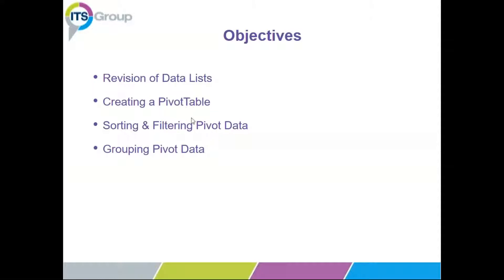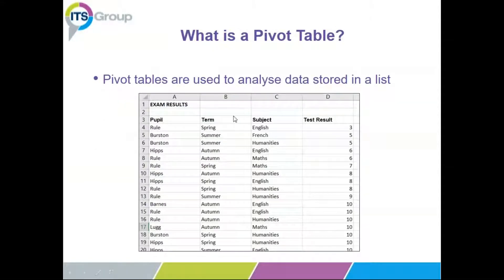Pivot tables are used to analyse data that's stored in list form. You'll often have lists with headings across the top and data underneath — usually many hundreds or even thousands of rows and many columns. Analysing that can be quite cumbersome because you don't always need all the columns or all the rows, and you end up putting filters on, taking them off, adding subtotals — really time consuming. The idea of a pivot means you can quickly rearrange the data to analyse it from different angles, just like in netball or basketball where you pivot to look around the field of play.